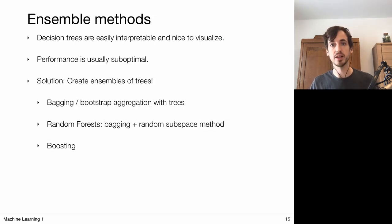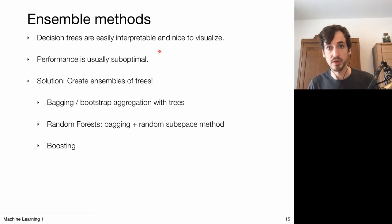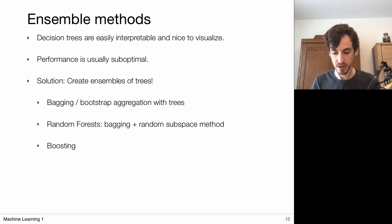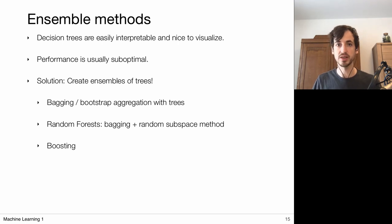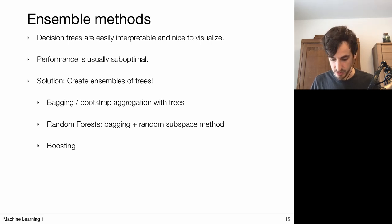We have now defined a way of building decision trees reliably for both classification and regression. To wrap up: decision trees are easily interpretable and nice to visualize. Decisions made early in the tree can be considered the most important splits. However, performance of single decision trees is usually suboptimal, and this can be solved by creating ensembles of trees, which eventually leads to the notion of random forests.